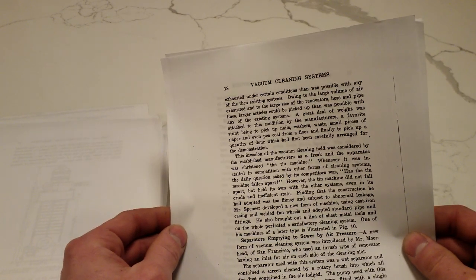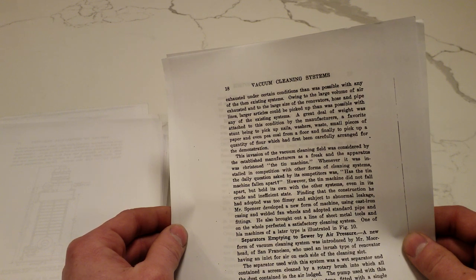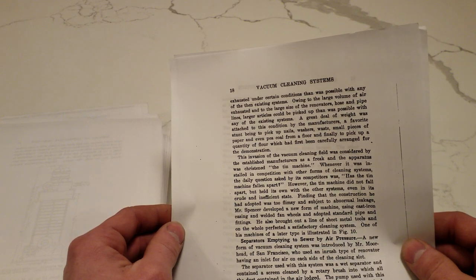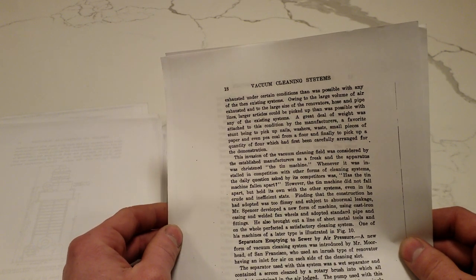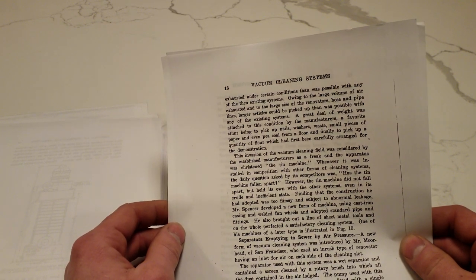Owing to the large volume of air and the large size of the renovators, hose and pipelines, larger articles could be picked up than was possible with any of the existing systems. A favorite stunt was to pick up nails, washers, waste, small pieces of paper, and even pea coal, and finally pick up a quantity of flour.